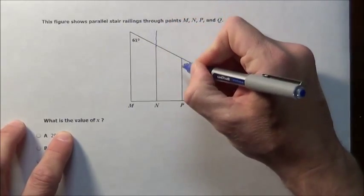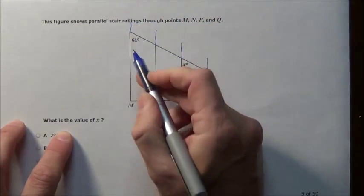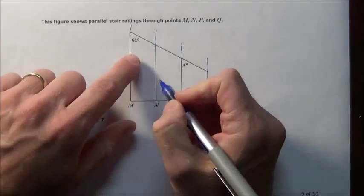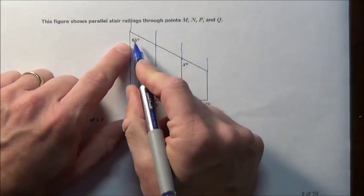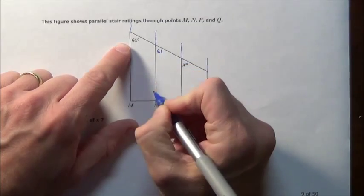If you want you can just imagine these being extended and you have a transversal right here. If that's 61, then you and I know since the bottom right is 61, the bottom right here corresponding angle is 61.